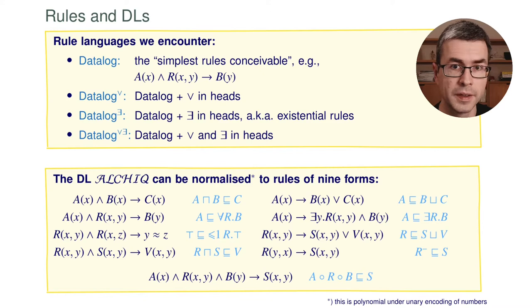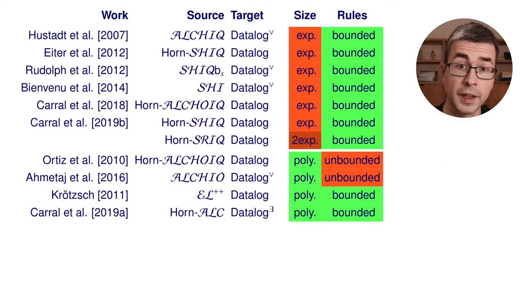These are the logics we are dealing with. What I had then shown you was this table with prior work and many different types of translations. I have argued that in spite of the many works that have been done in the area, many have certain shortcomings in terms of the size of the rewriting which is not a theoretical issue but can turn into a practical issue because tools do not like to have very large rule sets to handle.